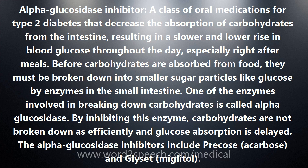Before carbohydrates are absorbed from food, they must be broken down into smaller sugar particles like glucose by enzymes in the small intestine. One of the enzymes involved in breaking down carbohydrates is called alpha-glucosidase. By inhibiting this enzyme, carbohydrates are not broken down as efficiently and glucose absorption is delayed.